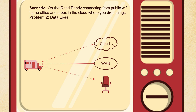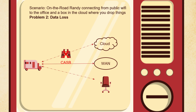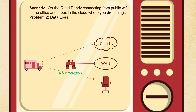Problem two: data loss. Things are being sent up into the cloud to be dropped in the storage box with no protection — easy to pick off. We block it with a CASB using a secure API connection rather than just a proxy. APIs are better than proxies in this case. We're protected by the CASB for cloud traffic, but what about data loss over the WAN? That's where SASE comes in — protection on the endpoint looking for data loss originating from the endpoint itself. You've got safety there.